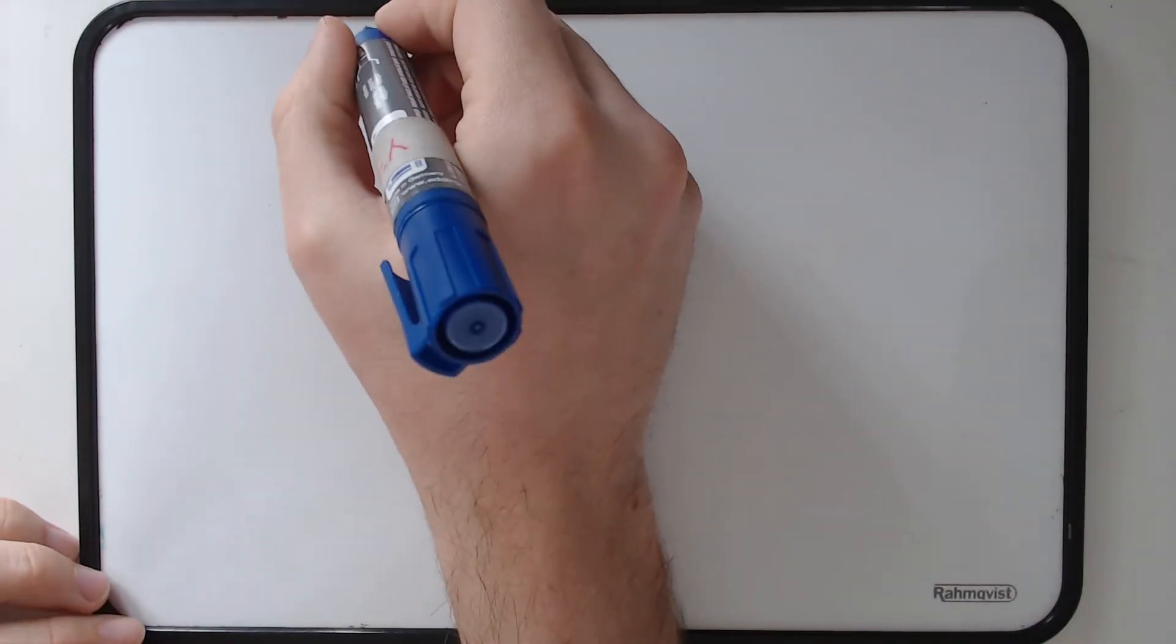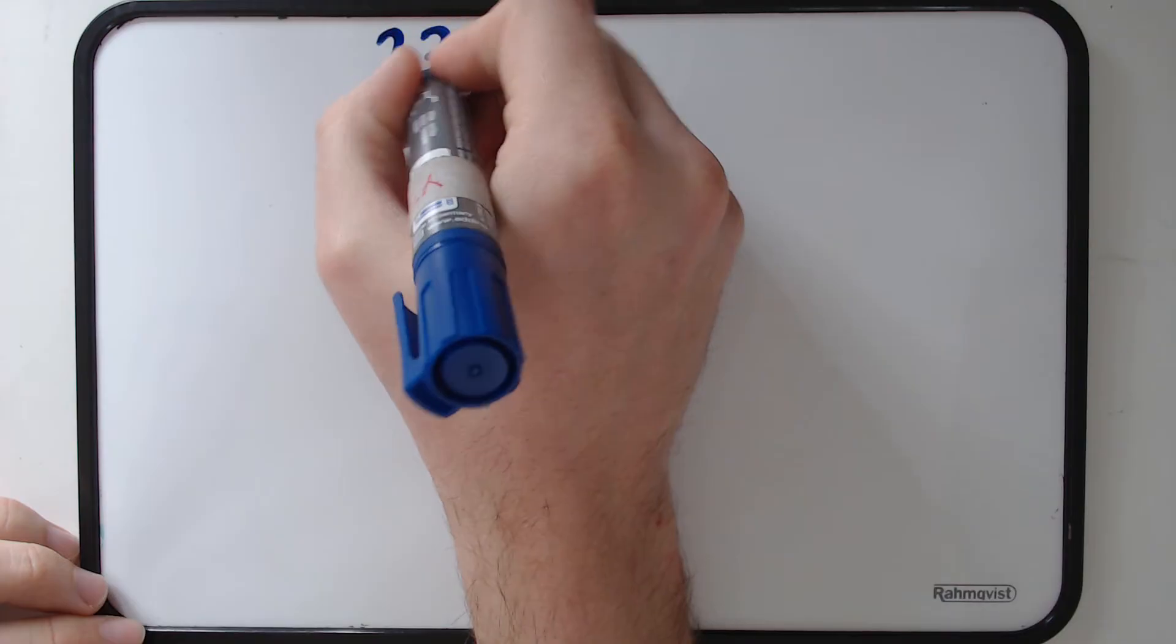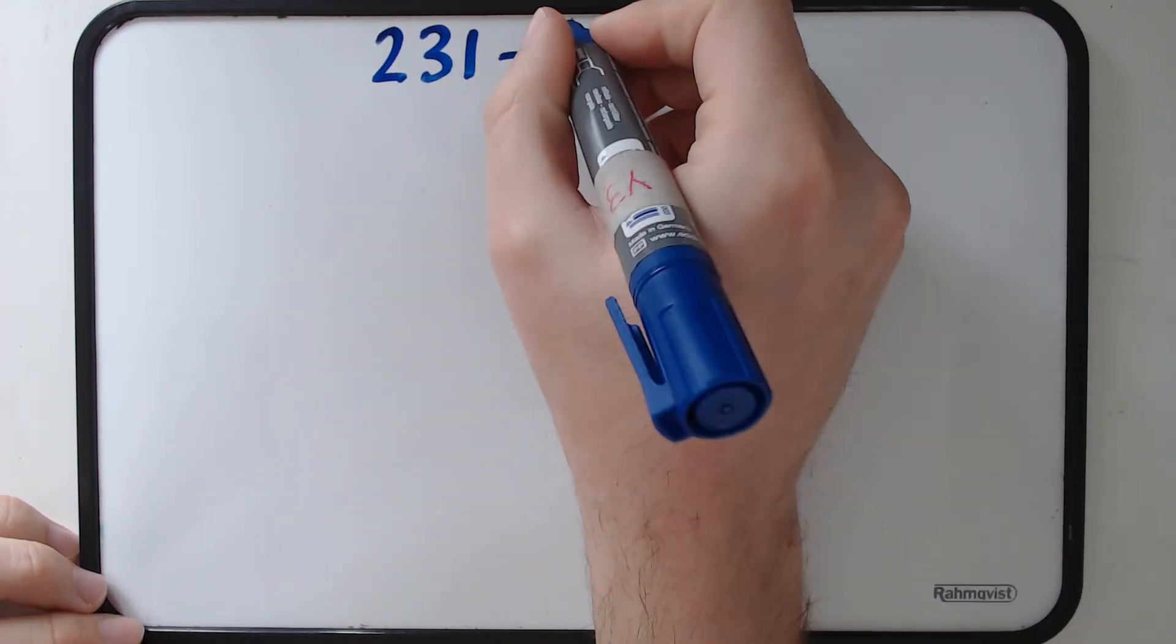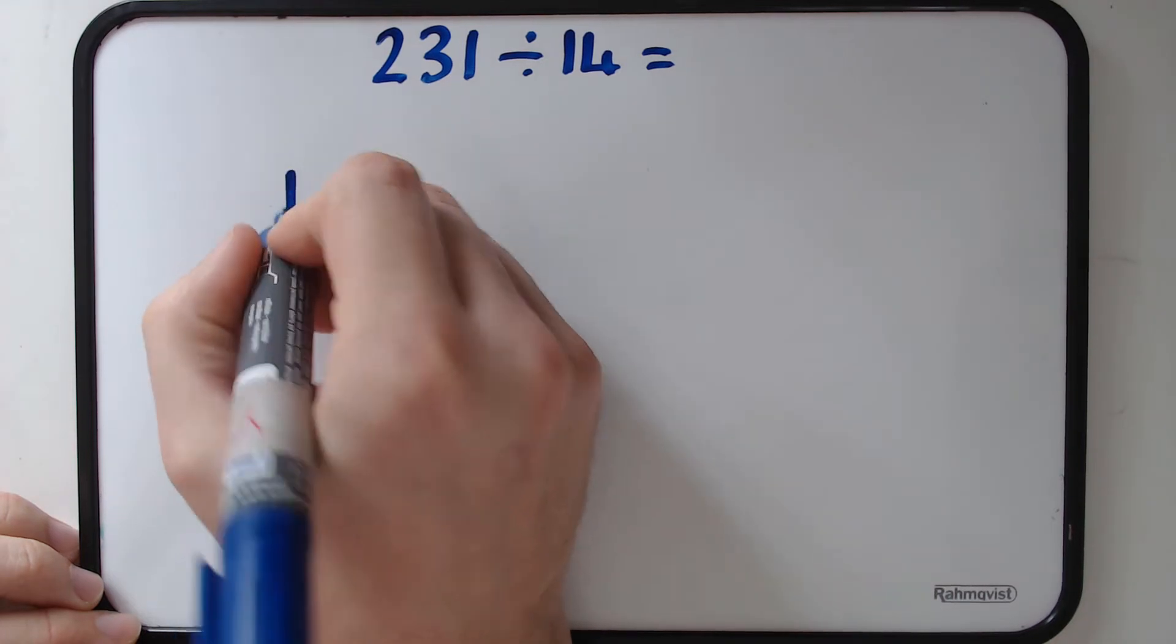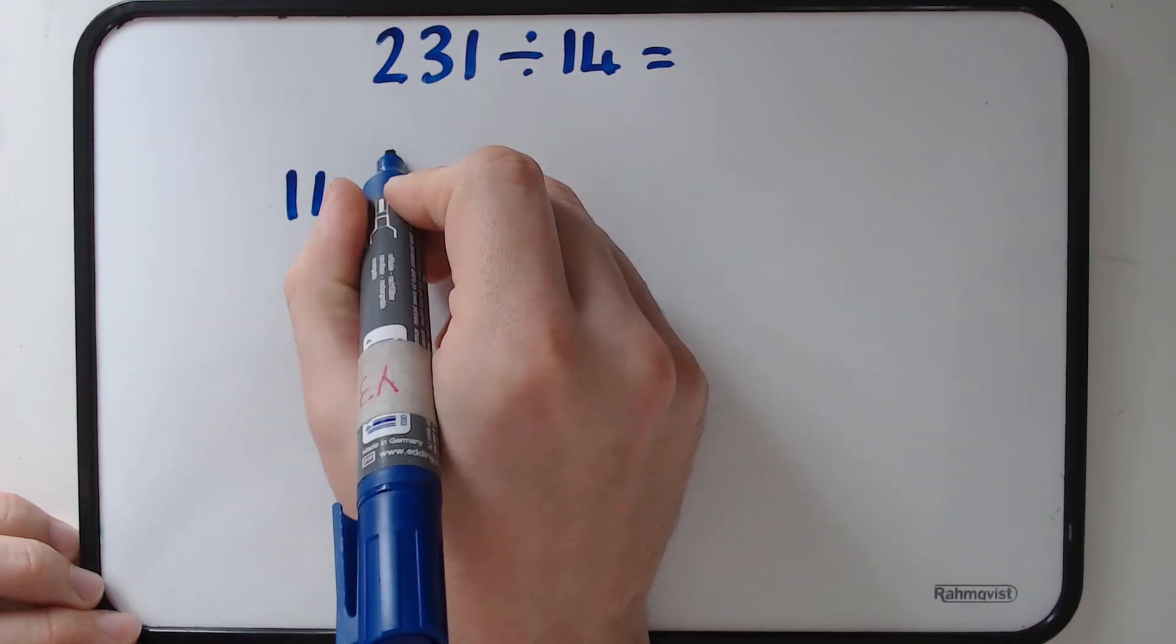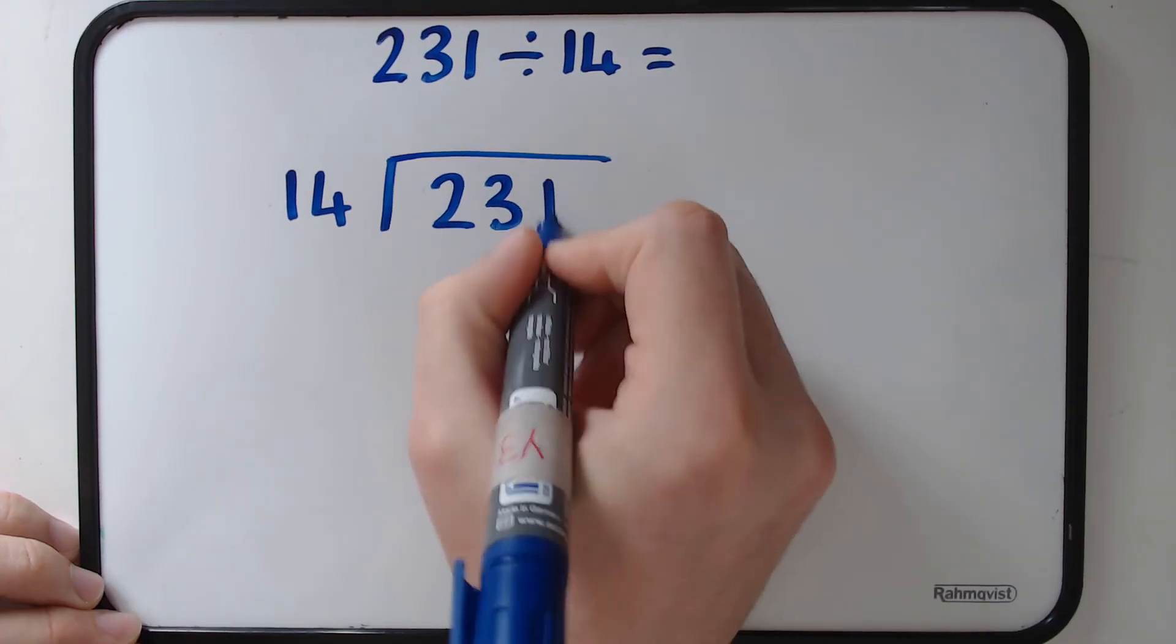For the last example, we're going to do a two-digit number. And this is a kind of question that might appear in Year 5 or Year 6 maths tests, particularly for long division. So we're going to do 231 divided by 14. Set it out exactly the same way. 14 on the outside, 231 on the inside.